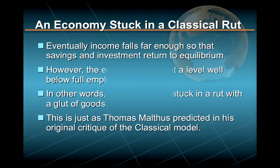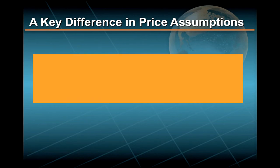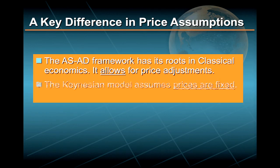Out of this classical-Keynesian debate have emerged two important models frequently used in macroeconomic analysis. One model, the aggregate supply-aggregate demand framework, has its roots in classical economics and allows for price adjustments in its framework. The second model, the Keynesian model, assumes that prices are fixed.